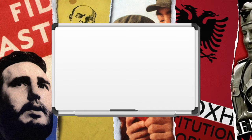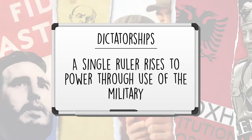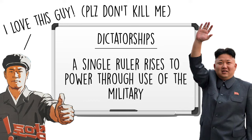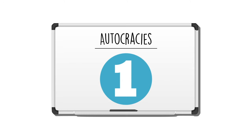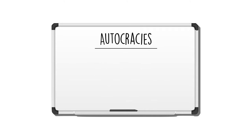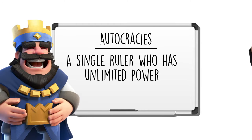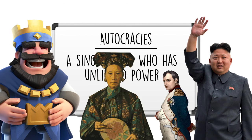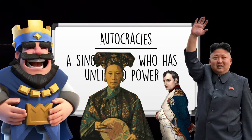Another form of government with one person in charge is a dictatorship. To be a dictator, you are not born into power — you rise to power through use of the military, and everybody has to follow your orders. Countries with dictators generally have very few guaranteed rights. The last form with one single ruler is an autocracy, where that single ruler has unlimited power. This could be like an absolute monarchy, a dictator, or an emperor. Even though some rulers might want to be benevolent, all that power usually goes to their head and they abuse it.